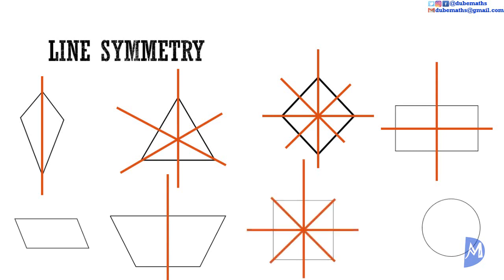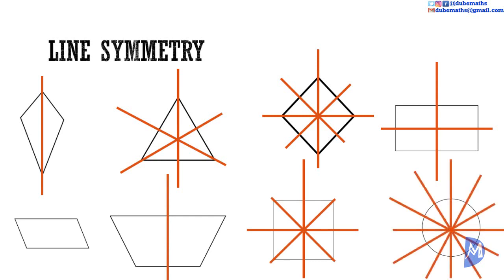The circle has an infinite number of lines of symmetry — a few are shown here. Any straight line of any orientation that passes through the center of the circle is a line of symmetry. Through these examples, we saw that a plane figure can have one or more lines of symmetry, and that there are plane figures with no lines of symmetry. Lines of symmetry can be horizontal, vertical, or sloping.